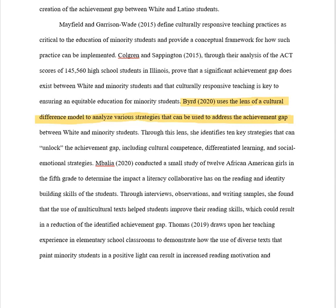Now once in a while, you might use someone's teaching experience — perhaps they have written a dissertation or even published a book or some active research study. For example, this author, Thomas 2019, draws upon her teaching experience in elementary school classrooms to demonstrate how the use of diverse texts that paint minority students in a positive light can result in increased reading motivation. Do not use these authors very often. If they are renowned for writing books on the subject, that's fine, but it's very hard to justify and prove their worth to the community and to this body of literature when they have just been a classroom teacher.